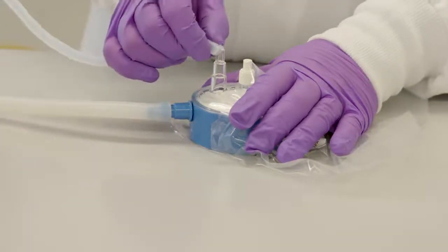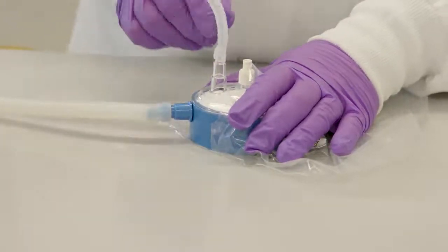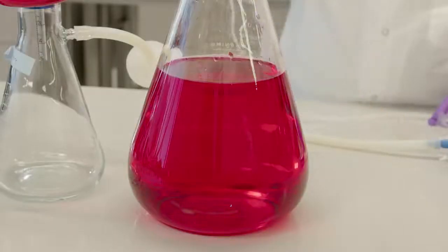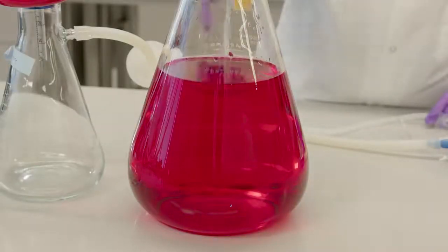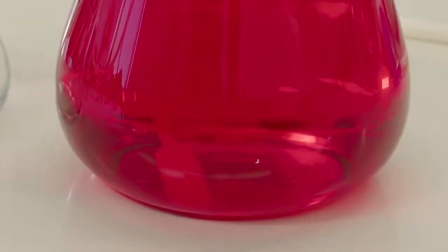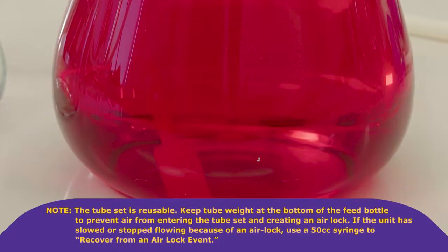Connect the feed tube to the barbed fitting marked inlet on the clear dome top of the device. Place the other end of the tube into the solution you want to filter with the tube weight at the bottom of the feeder container. Note, the tube set is reusable. Keep the tube weight at the bottom of the feed bottle to prevent air from entering the tube set and creating an airlock.